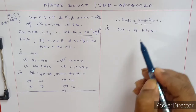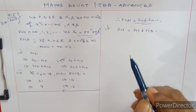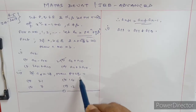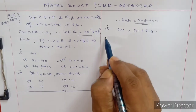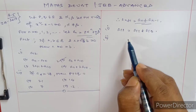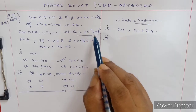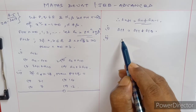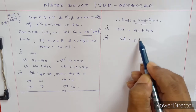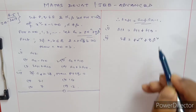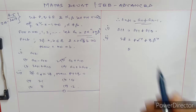Now for the second question: a₄ = 28, then what is p + 2q? So a₄ ka matlab kya hai — that is p·α⁴ + q·β⁴ = 28.